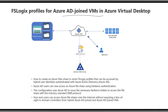When I say Azure AD joined VMs, it means the session host is completely joined to Azure AD — it does not have any footprint on Active Directory. Without that footprint, it is not possible to authenticate the file share over the SMB protocol. So earlier, Azure AD joined VMs were only used for personal host pools or task-based workloads that don't require a profile solution.